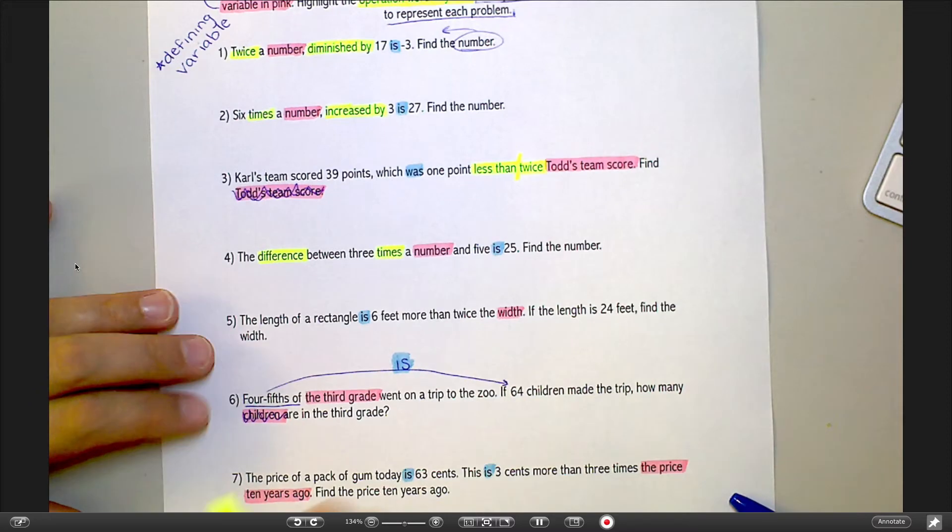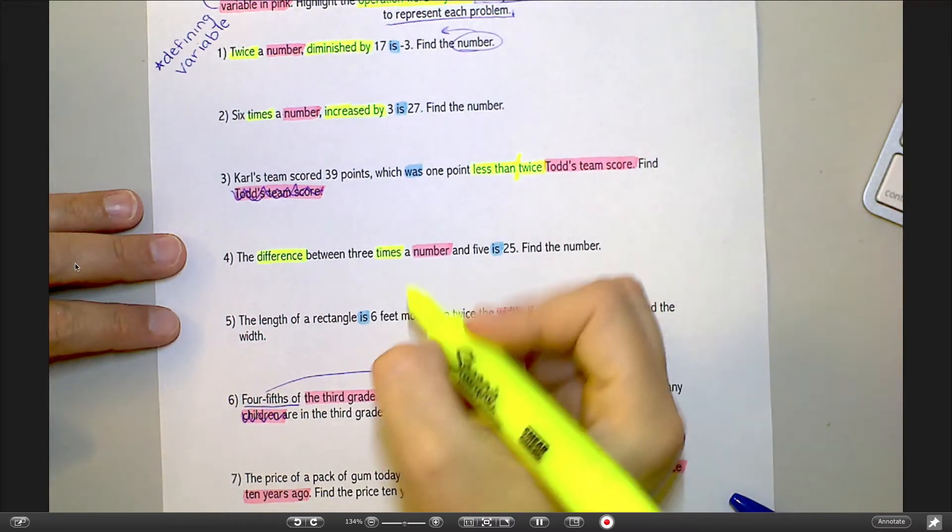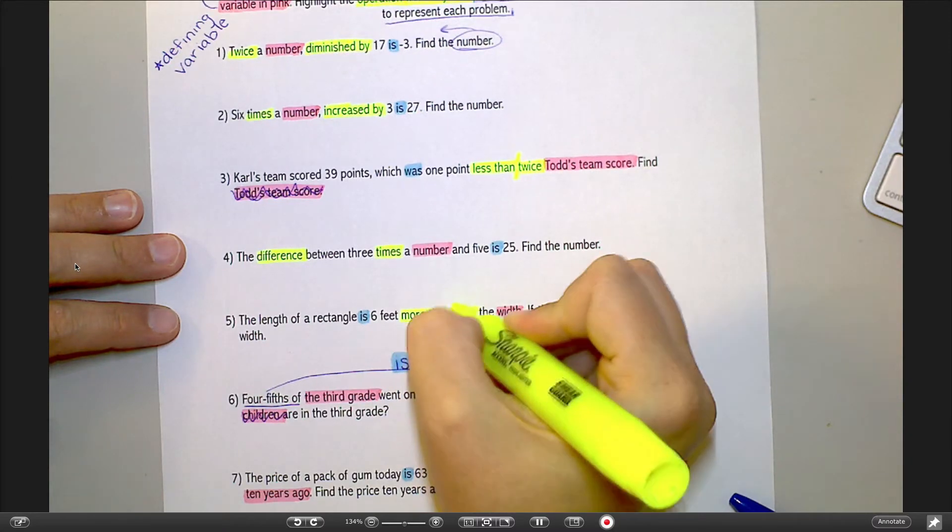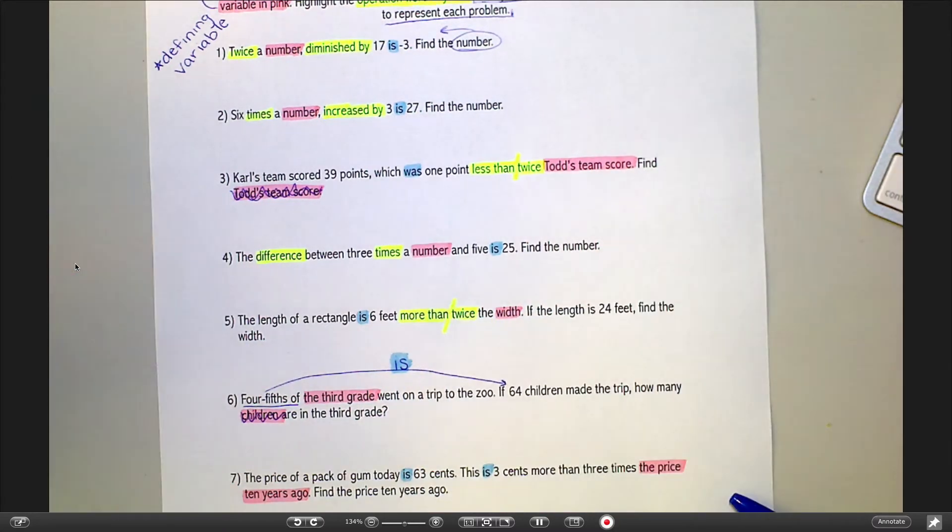Number five, the length of the rectangle is six feet. More than means addition. Twice means to multiply by two. Again, that's two separate words there.